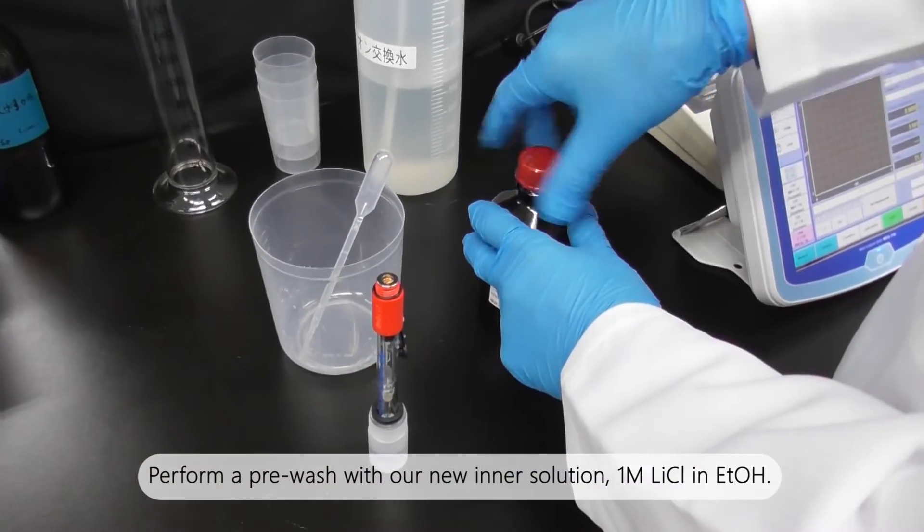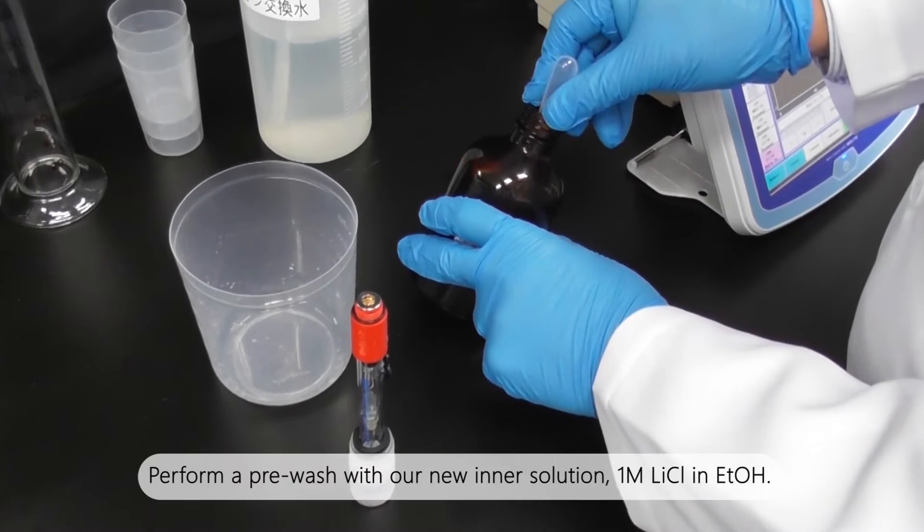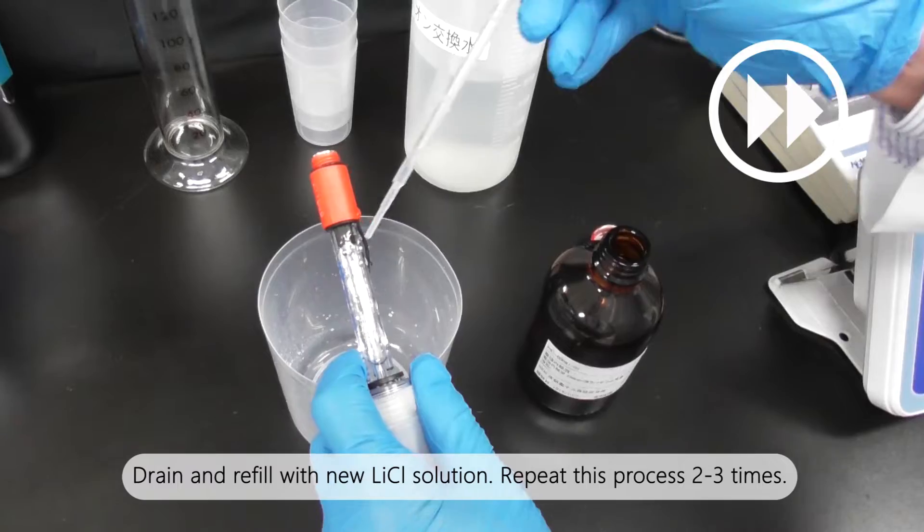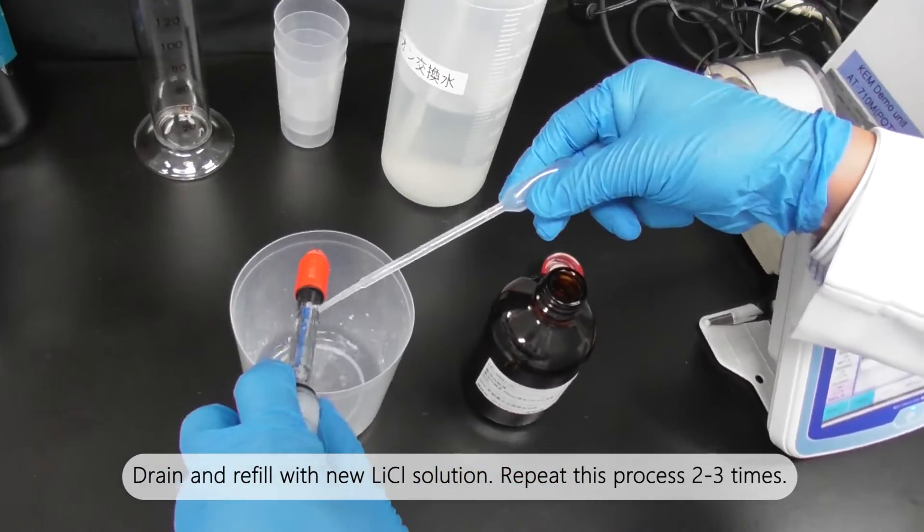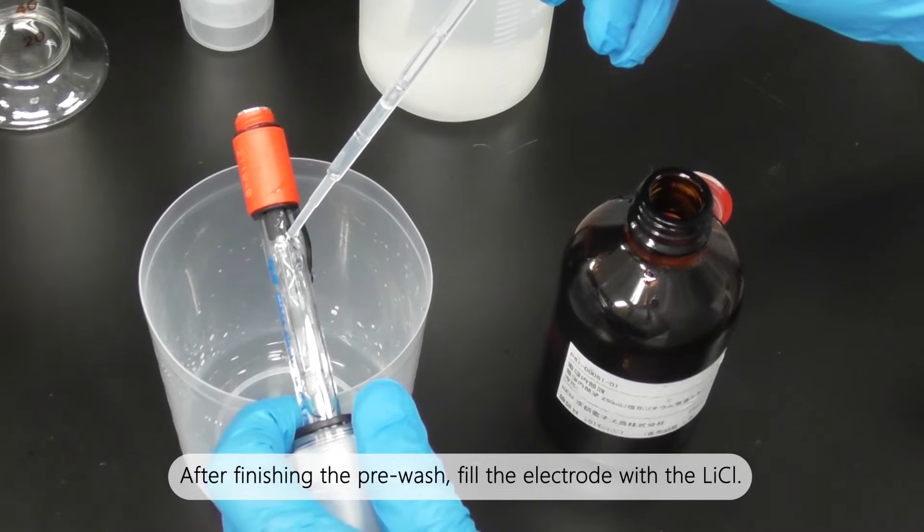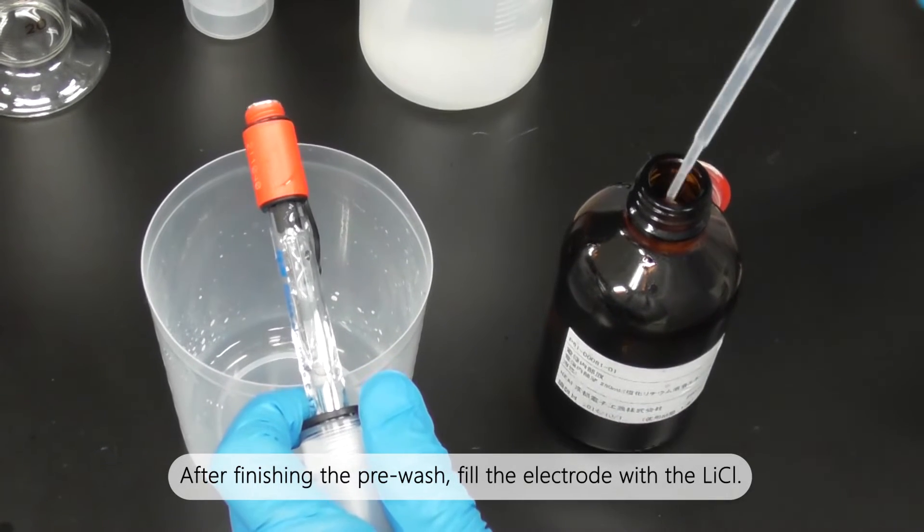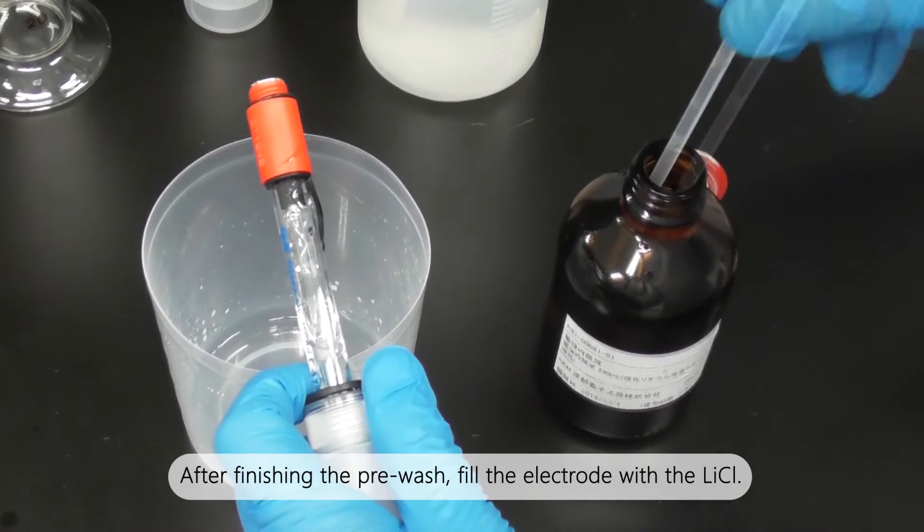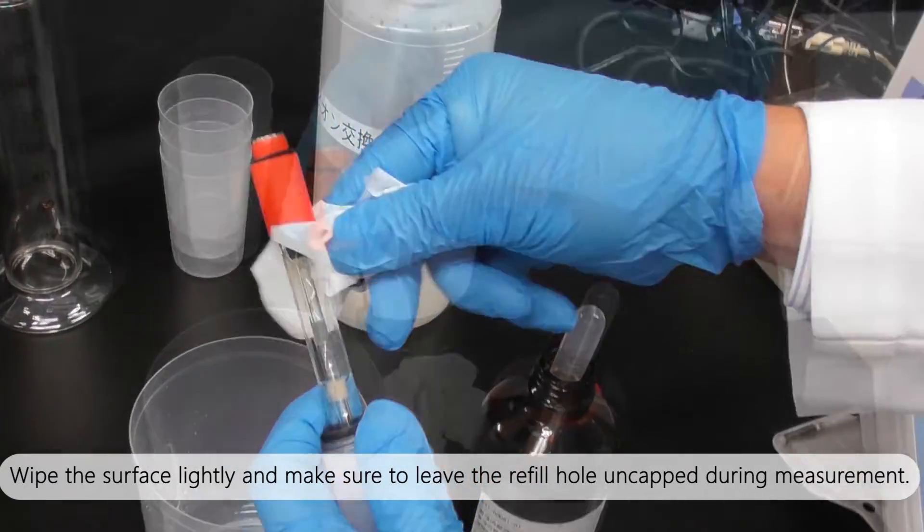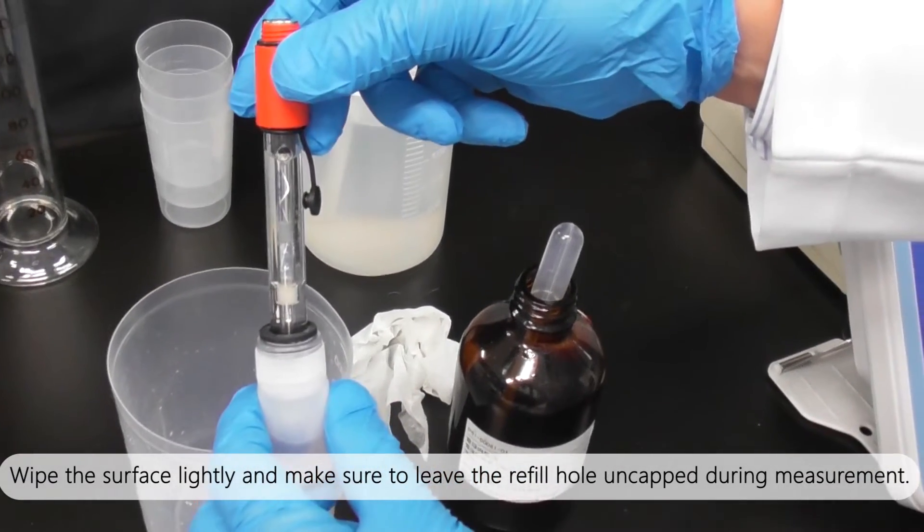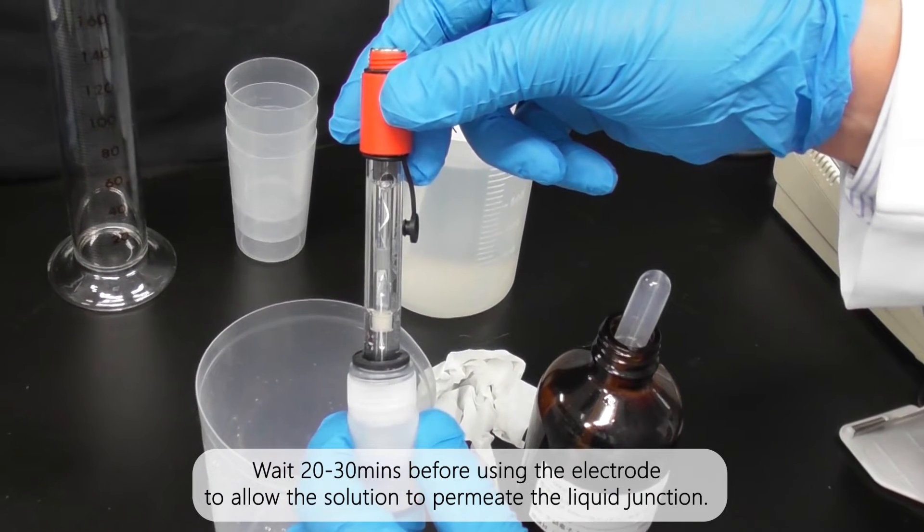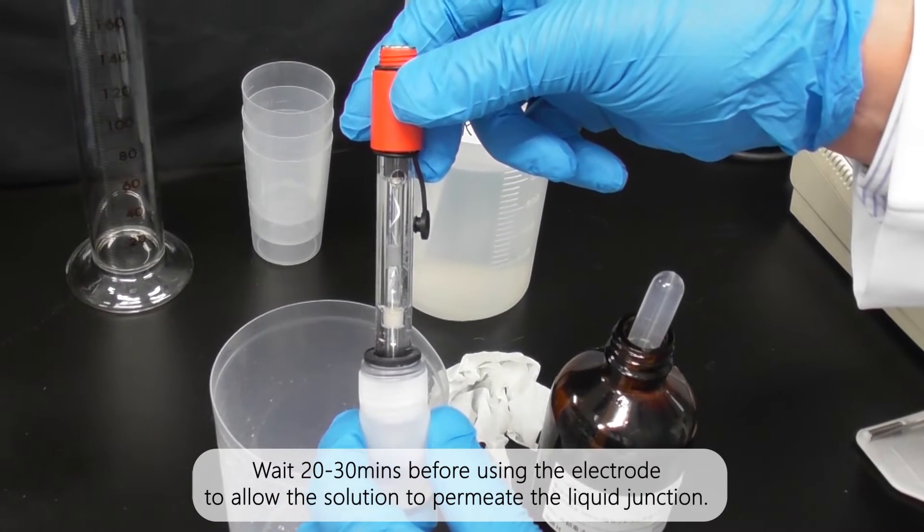Perform a pre-wash with our new inner solution, one mole lithium chloride in ethanol. Drain and refill with new lithium chloride solution. Repeat this process two to three times. After finishing the pre-wash, fill the electrode with lithium chloride. Wipe the surface lightly and make sure to leave the refill hole uncapped during measurement. Wait 20 to 30 minutes before using the electrode to allow the solution to permeate the liquid junction.